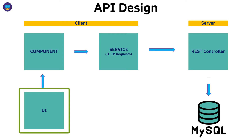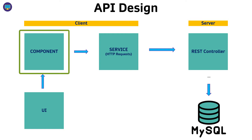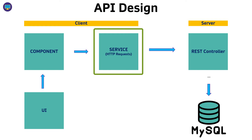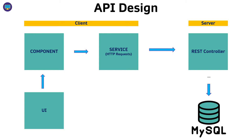The front end will have a few components: a UI that the user sees, which connects to a component, and that component has access to a service. The service is what makes HTTP requests to the backend. So the flow goes from the UI, through the component, through the service, and then over the internet to the backend. The first thing we'll do once the Angular application is ready is build that service.